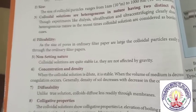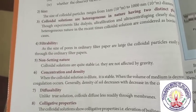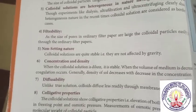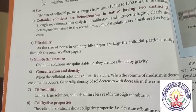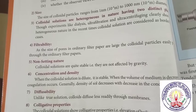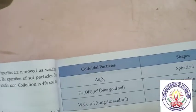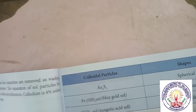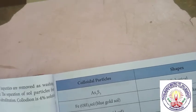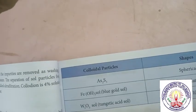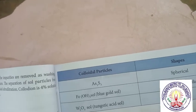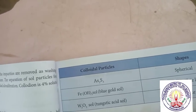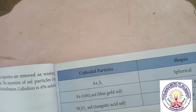Measurement of osmotic pressure is used to find the molecular weight of colloidal particles. Shape of colloid particles: colloidal particles can have various shapes. For example, arsenic trisulfide — spherical; iron hydroxide solution — blue; gold — red, disc or plate-like; tungsten pentoxide solutions — rod or lath shape.